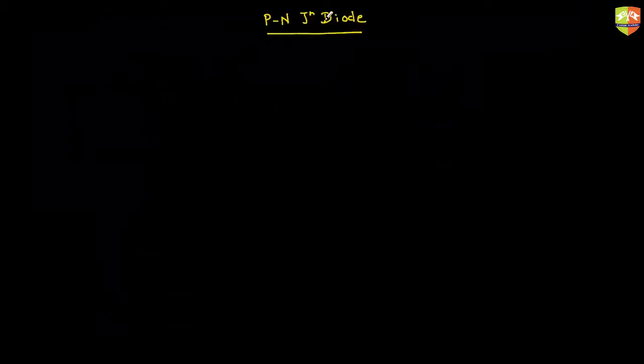Let's understand the characteristic graph for a PN junction diode. This is a PN junction diode. To draw the characteristic graph, we measure the potential difference and current across the diode, record different values, and plot the graph. The overall circuit looks like this — you have a PN junction, and this is how you represent it in a circuit. The flat side is the P side and the other is the N side.